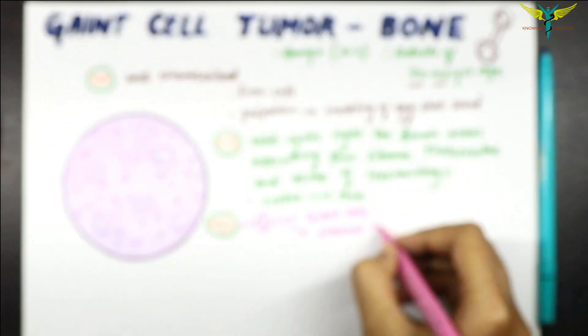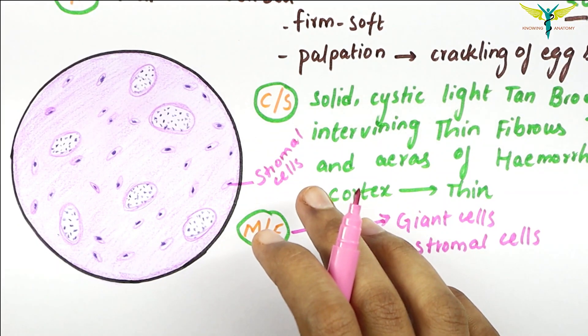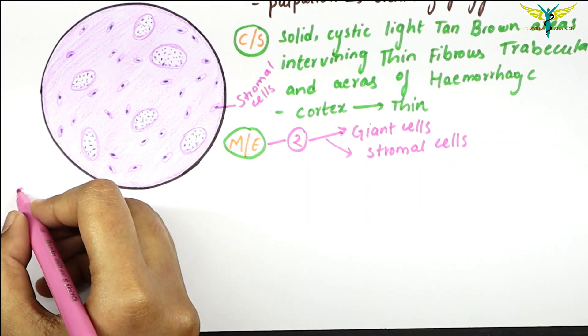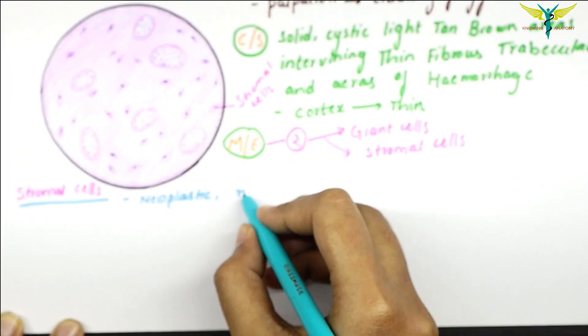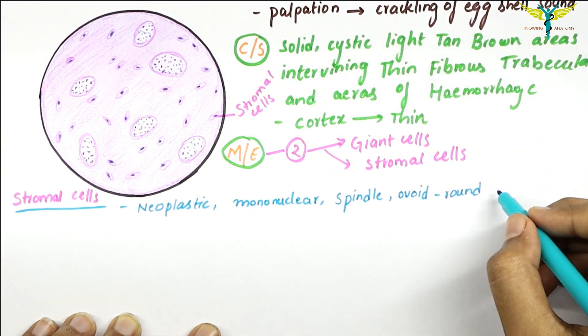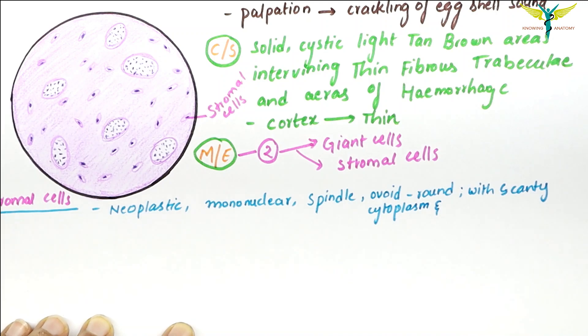Coming to the microscopic appearance of the giant cell tumor of the bone: in the microscopy, two main components are seen — these are the giant cells and the stromal component. In this diagram, these are the stromal cells, which are neoplastic cells. They are mononuclear, spindle to ovoid to round in shape, with scanty cytoplasm, and plump central nuclei with nucleoli are present.